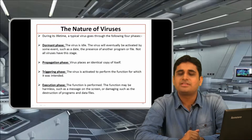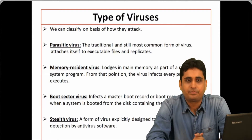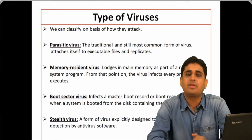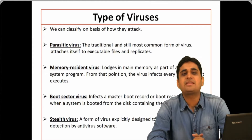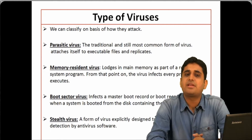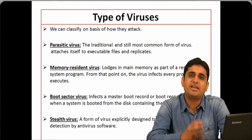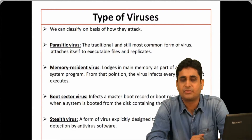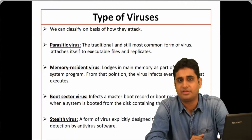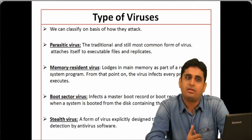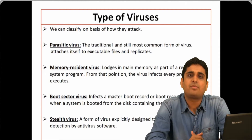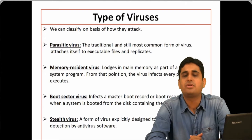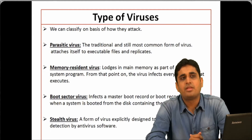Those are the four phases of a virus. Now let us look at different types of viruses. First is the parasitic virus — like a parasite, it attaches itself to another program or application, and whenever that program runs, the virus will also execute.